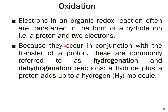In organic redox reactions, electrons are often transferred in the form of a hydride ion (H⁻). A hydride ion is a proton plus two electrons: H⁺ has no electrons, so adding two electrons gives H⁻, the hydride ion. Because these occur with proton transfer, they are commonly referred to as hydrogenation and dehydrogenation reactions.